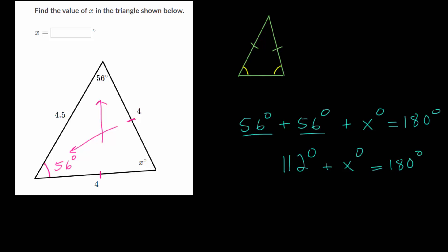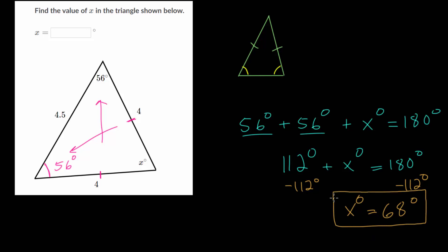To solve this we just subtract 112 degrees from each side. Taking away 110 brings us to 70 degrees, and taking away two more gives us 68 degrees. So that's what we think is our answer. To check this, we plug it in — all three angles need to add up to 180 degrees, which you can verify by hand or with a calculator. When you add them together you'll see they do add up to 180, so our missing angle is 68 degrees.